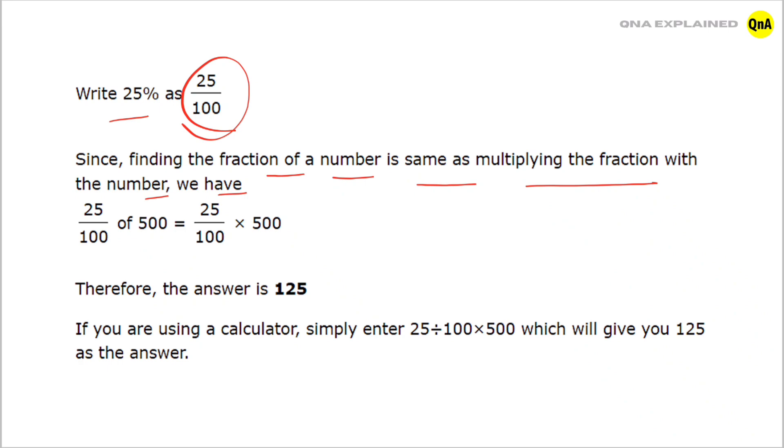25 upon 100 of 500 is equal to 25 upon 100 into 500.